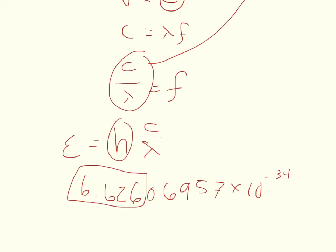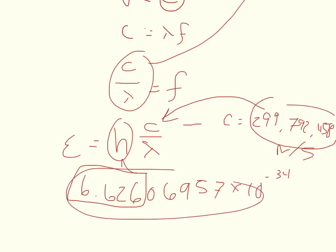And then the speed of light, c, is equal to 299,792,458 meters per second. And the last thing you need to plug in, so this number will go right here, and this number will go right here.